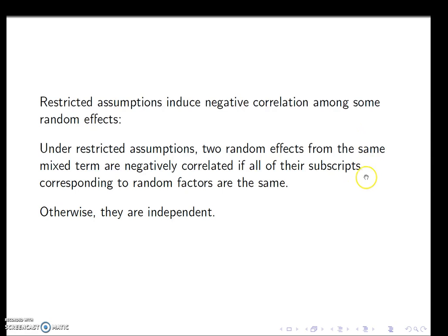When we assume restrictions on our model, we're essentially saying that the two random effects from the same mixed term are going to be negatively correlated if their subscripts corresponding to the random factor is the same. And otherwise, they're independent. So sometimes this makes sense. Sometimes it does not.